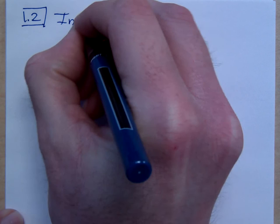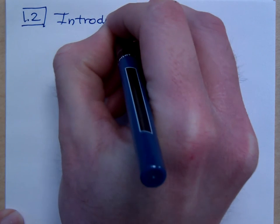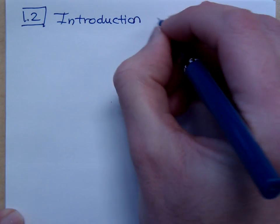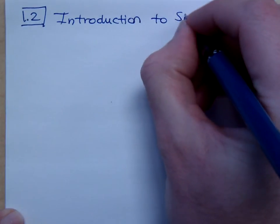This is the part where we start to cringe. In section 1.2, we're talking about an introduction to signed numbers.